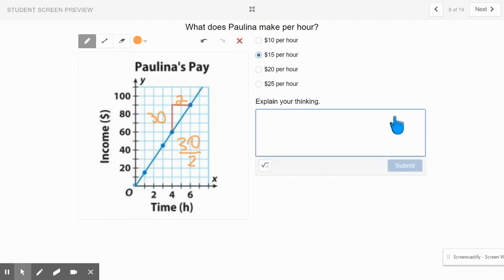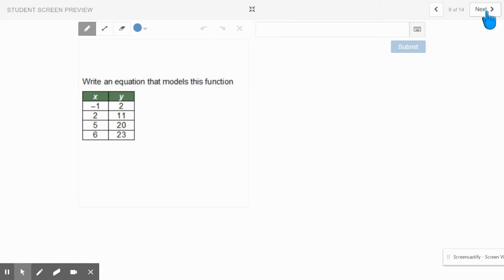And you can explain your thinking. I reduced 30 over 2. I knew these were actual points too. Okay. Excellent.